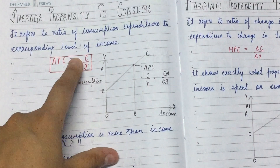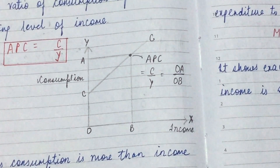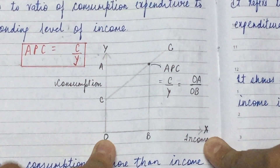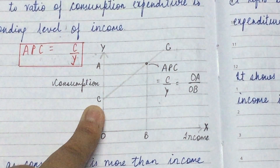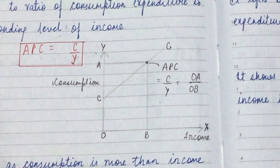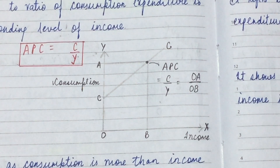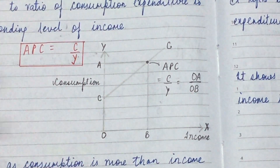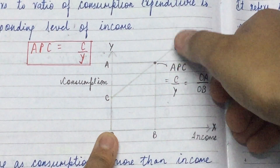On the Y-axis, we are measuring consumption, and on the X-axis, we are measuring income. Consumption starts from a positive intercept because, as explained in the previous video, we have assumed that our consumption is autonomous. This is a freehand curve — no special plotting or marking is needed. We draw a straight line and label it C, with points A and B on it.